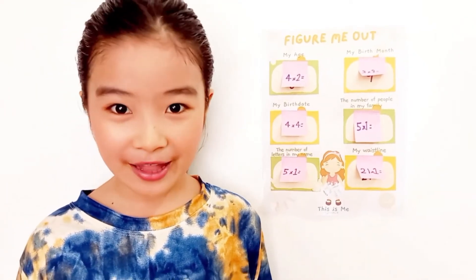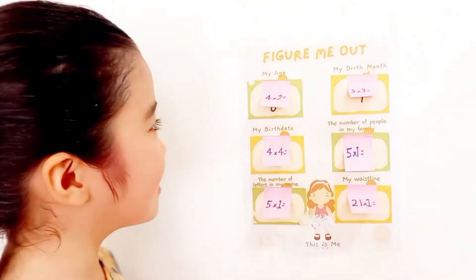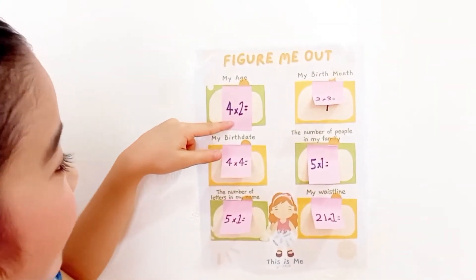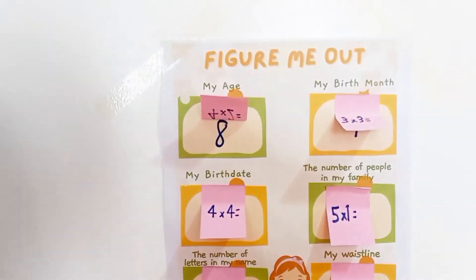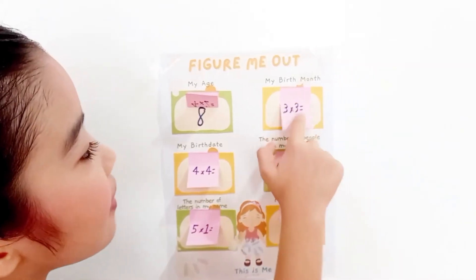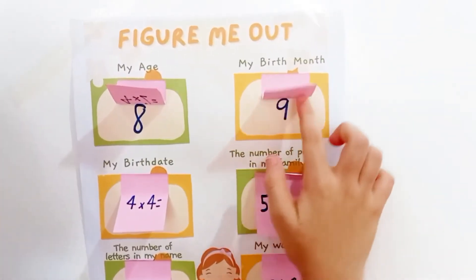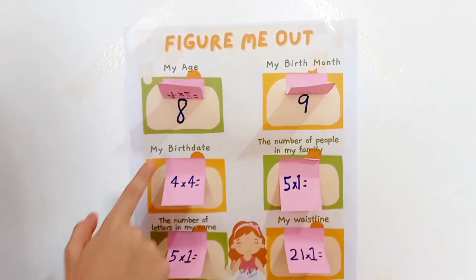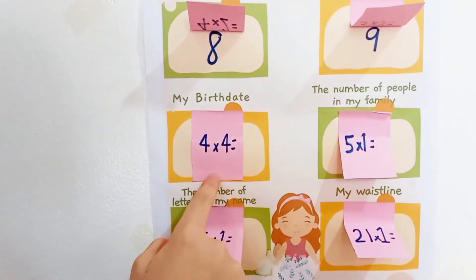my birth date, and name. First one: what is my age? Four times two equals eight — I am eight years old. Next, my birth month: three times three equals nine, nine is September.